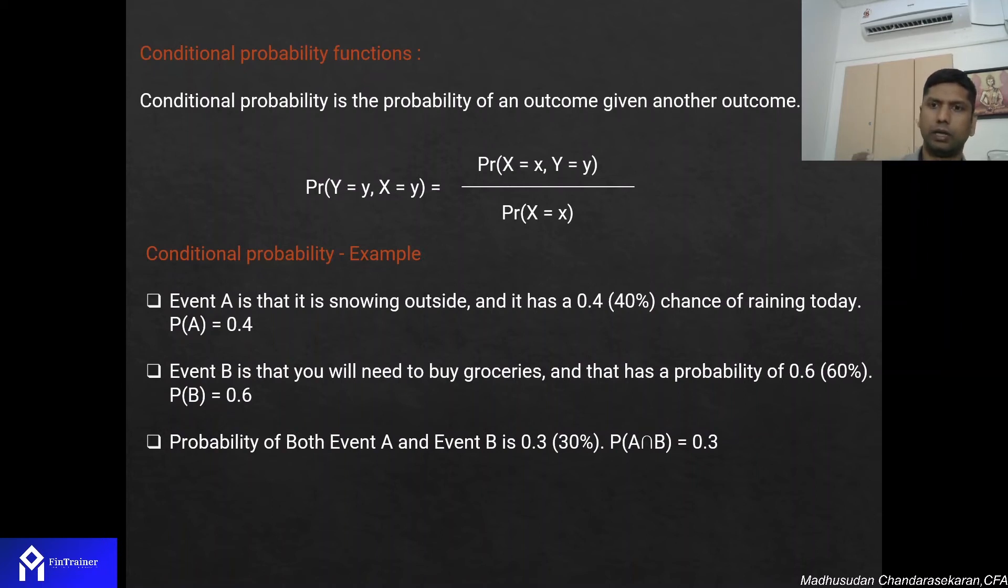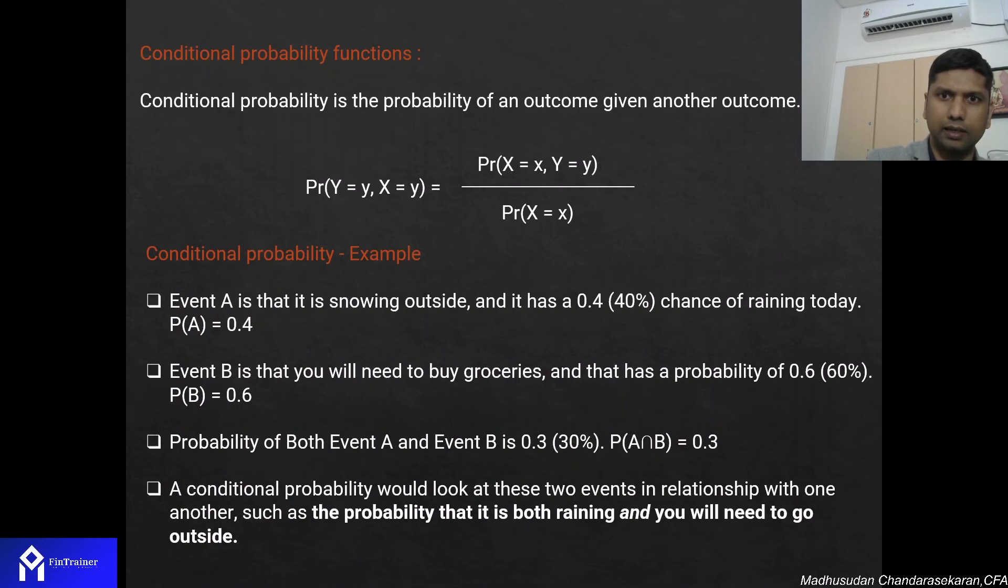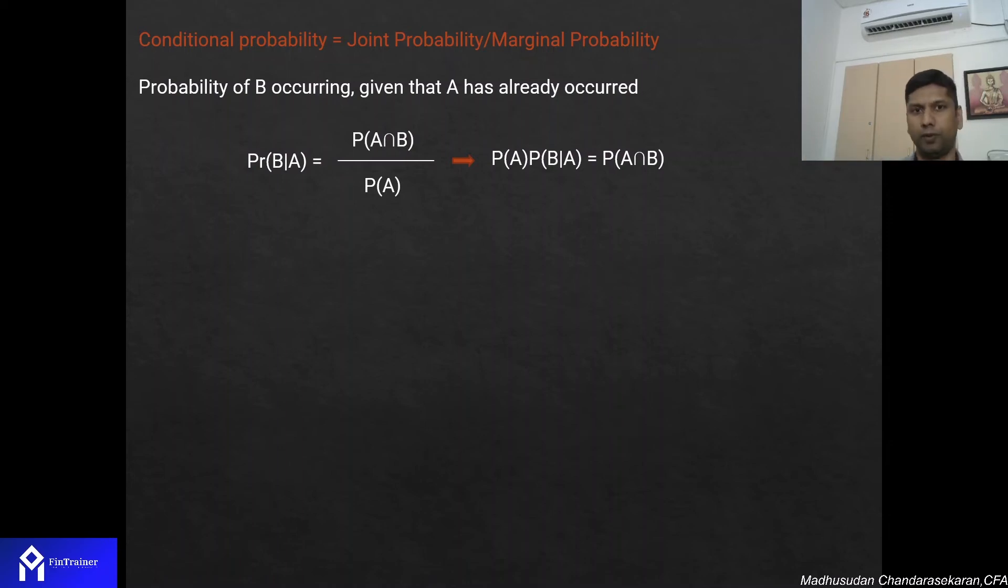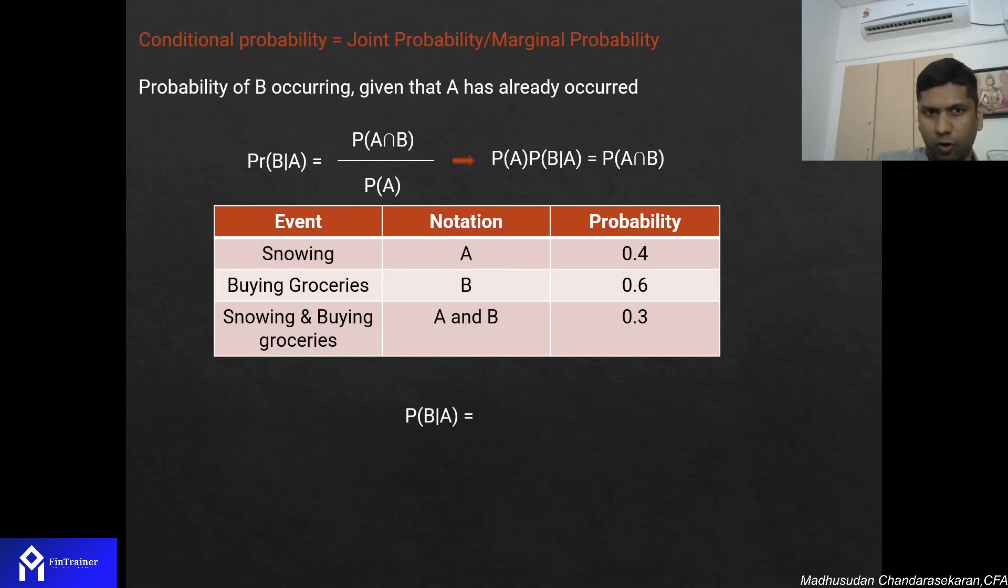Just in terms of the denominator, the A intersection B on the numerator is the same, but whichever event has already happened comes in the denominator. Here we are using probability of A in the denominator, which is the probability of snowing, 40%. So 30% divided by 40%, or 0.3 divided by 0.4, gives us a probability of 75% of the times where I have to go buy groceries when it is already snowing.